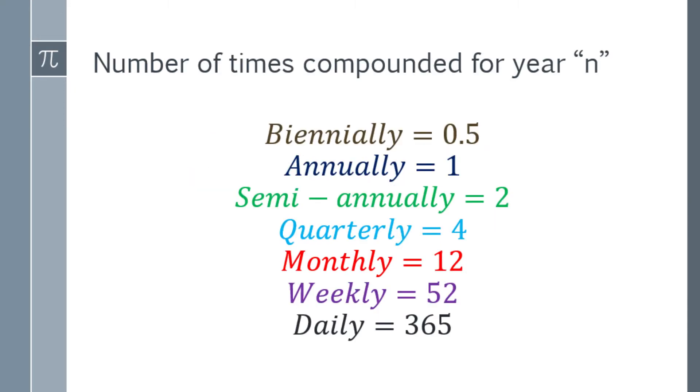Let's also review what is the number of times compounded for a year. First we have biannually, which is every two years, that will be 0.5. Annually is 1. Semi-annually is 2. Quarterly will be 4. Monthly will be 12. Weekly is 52, and daily is 365.